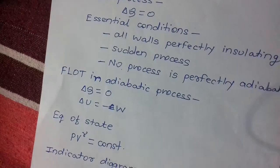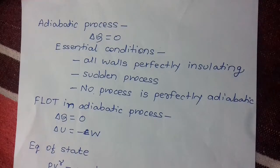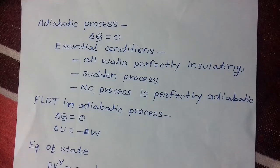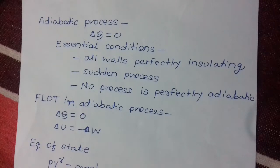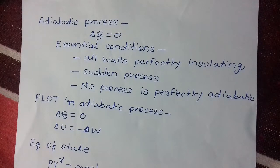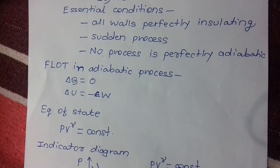Adiabatic process: heat is neither provided to nor taken out of the system, so ΔQ = 0. Essential conditions: all walls must be perfectly insulating and the process must be sudden. No process is perfectly adiabatic. Since ΔQ = 0, ΔU = −W. The equation of state is PV^γ = constant.